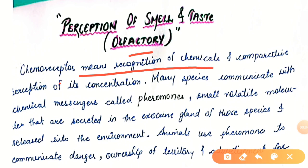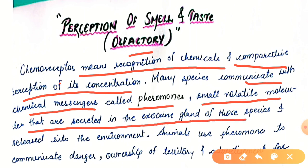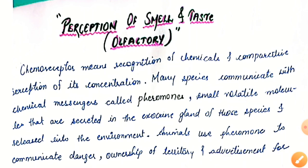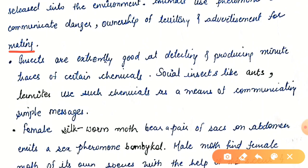Olfactory — chemoreceptors means recognition of chemicals and comparative perception of their concentration. Many species communicate with chemical messengers called pheromones — small volatile molecules that are secreted in the exocrine glands of those species and released into the environment. Animals use pheromones to communicate danger, ownership of territory, and advertisement for mating. So chemical or olfactory perception is related to pheromones.